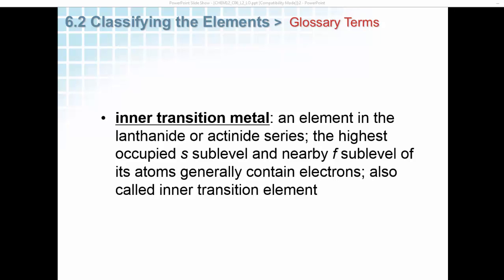Inner transition metals are elements in the lanthanide or actinide series. The highest occupied S sublevels and nearby F sublevels of their atoms generally contain electrons, also called inner transition elements.